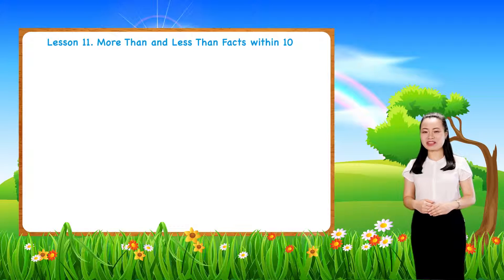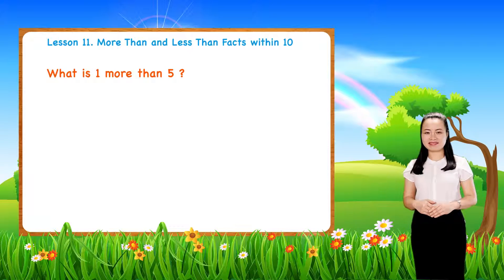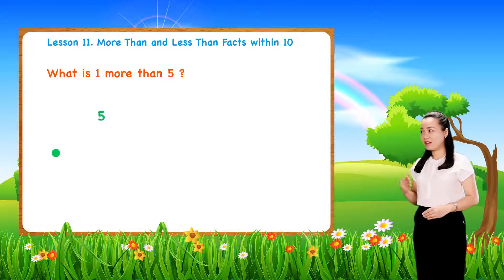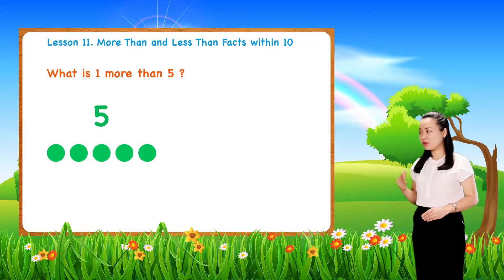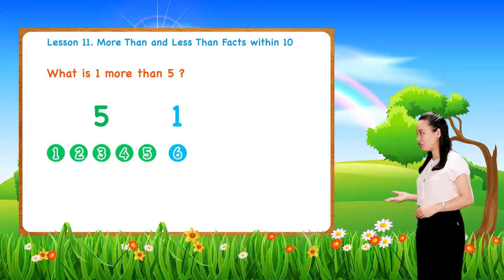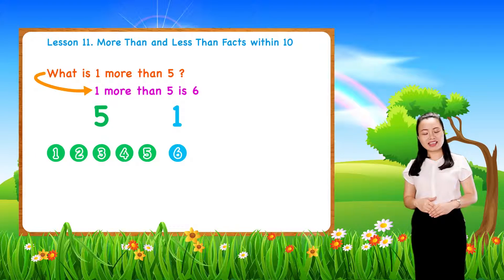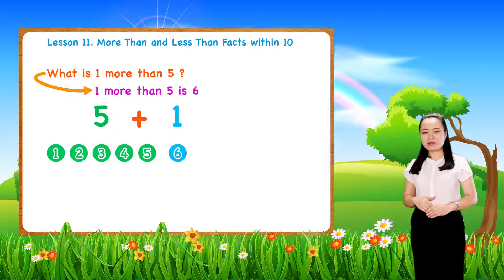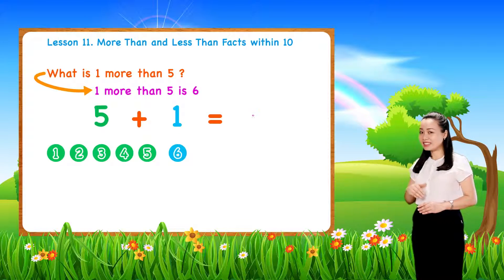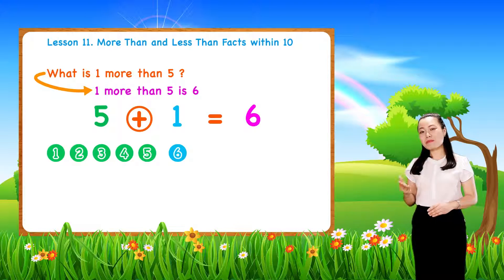Let's start with a question. What is one more than five? Here, we have five dots and one more. So, we have six dots. Therefore, one more than five is six. Notice, five plus one equals six.